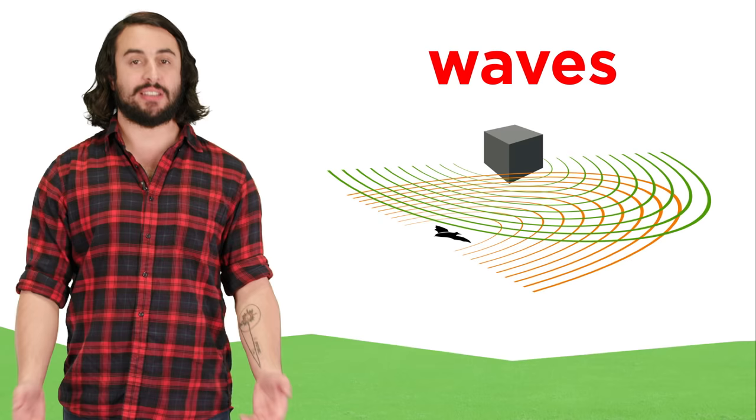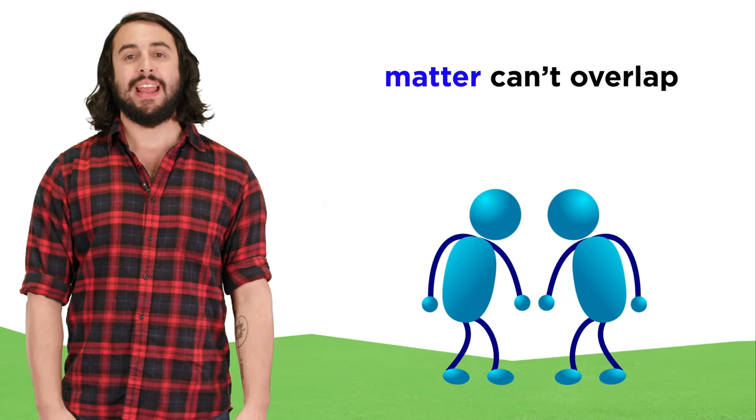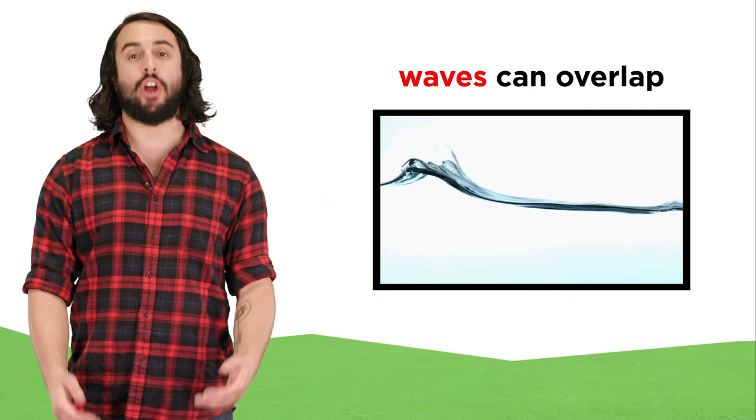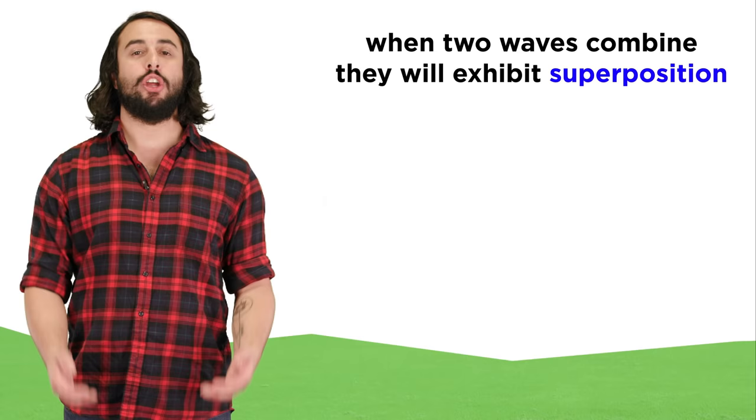We know that two solid objects, like two people, can't occupy the same space at the same time. But mechanical waves are not matter. They are displacements of matter that carry energy, so two waves can occupy the same space. When two waves combine in this way, it is called superposition.